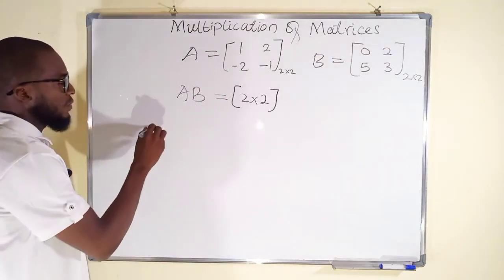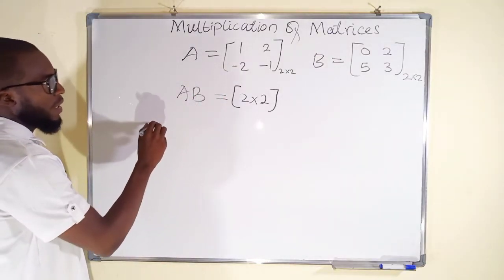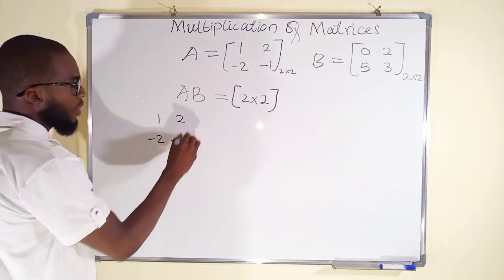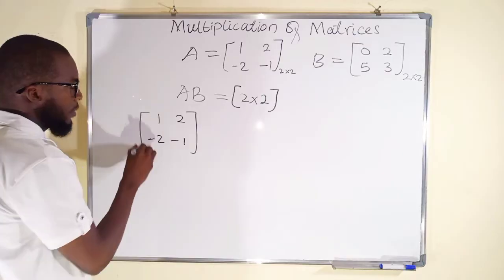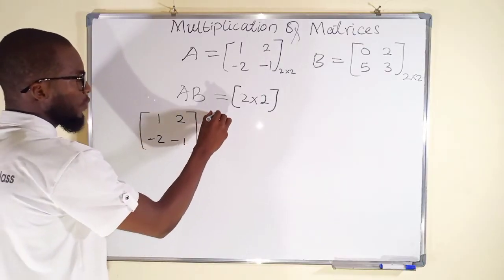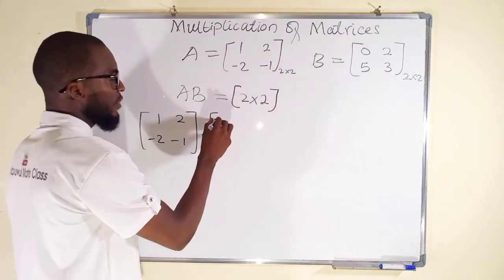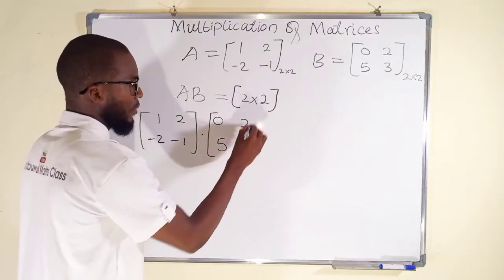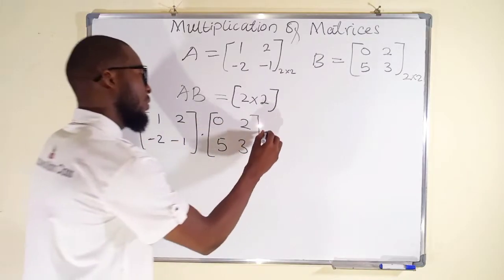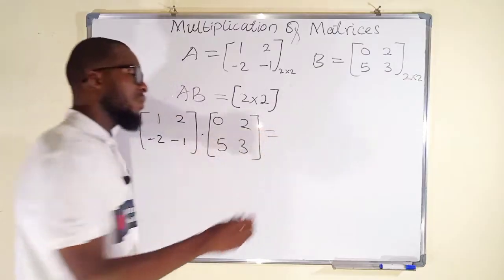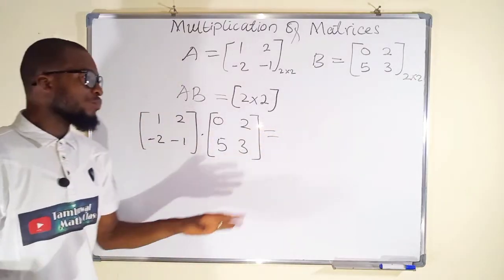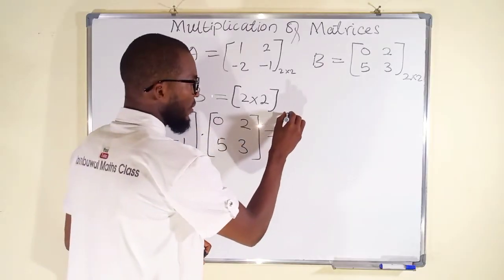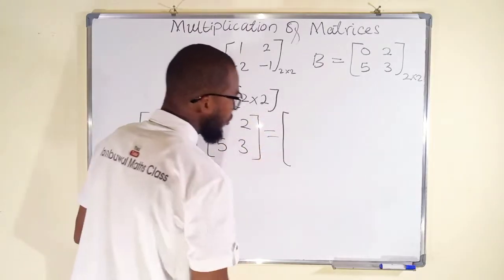Matrix A is [1, -2; 2, -1] and we want to multiply it by matrix B [0, 2; 5, 3]. Because it is 2 by 2, the result will also be a 2 by 2 matrix.